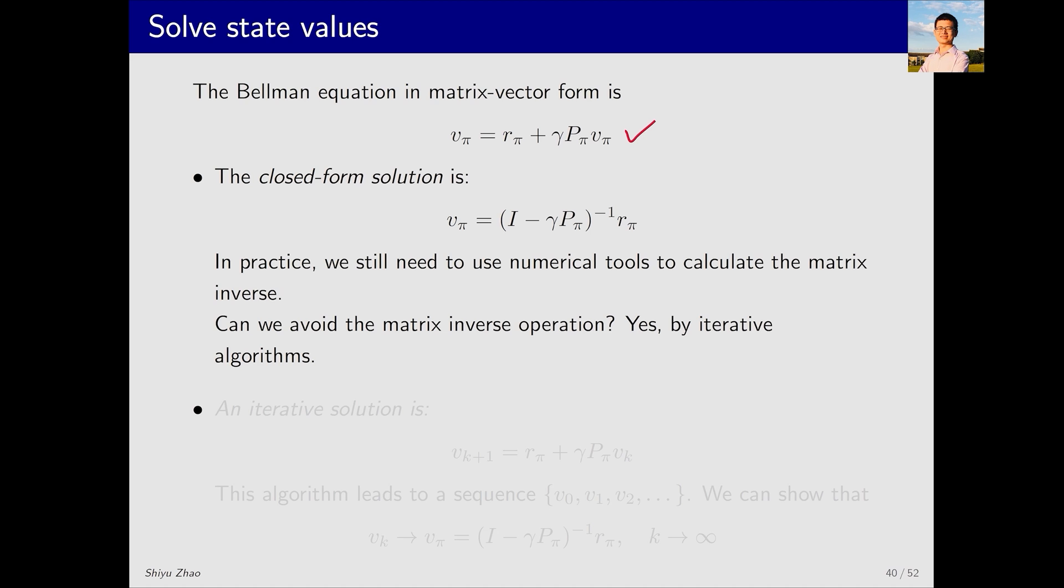Here is the matrix vector form of the Bellman equation we've derived. Next, we present two methods for solving it. The first method is a closed form solution, which directly provides an analytical expression for state values, like this. How do we get this solution? It's quite simple and I encourage you to derive it on your own. Essentially, you can move this term to the left-hand side and then apply the inverse of a matrix to get the solution. This closed form solution has an elegant expression, but it's not typically used in practice because it requires calculating a matrix inverse. When the state space is large, the dimensionality of the matrix also becomes large, making the computation of the inverse quite demanding.